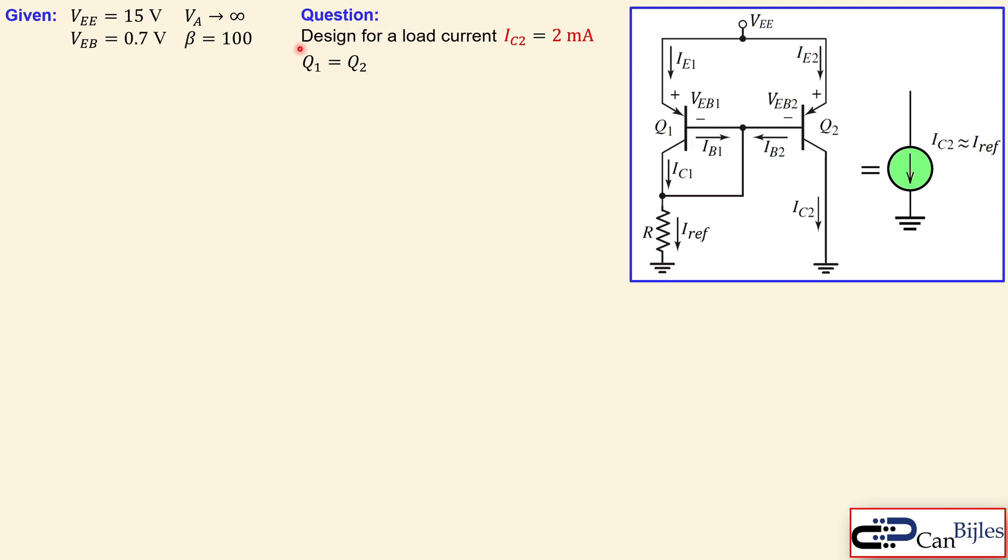The question in place is the following. There's a design problem. Design for a load current IC2 of 2 milliamps. So that's actually the current flowing here. You see again the reverse action compared to the NPN.